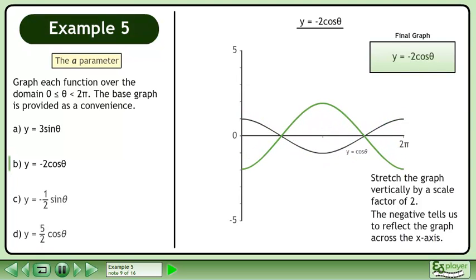The negative tells us to reflect the graph across the x-axis. This is the final graph, y equals negative 2 cos θ.